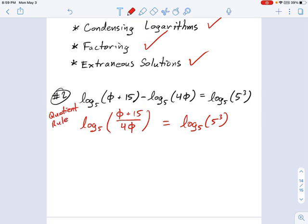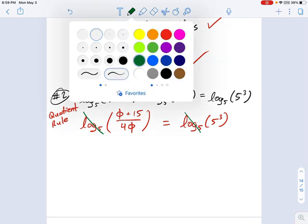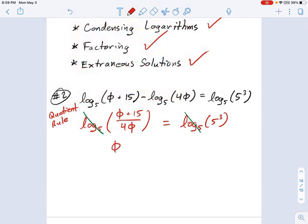Now, since there's an equal logarithm on both sides - it's log base 5 on each of these things - I can actually cancel those out. So what I get after doing that is this simpler equation: (φ + 15) / 4φ equals 5 cubed.